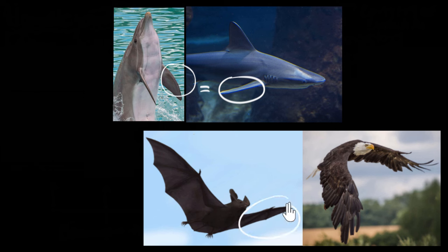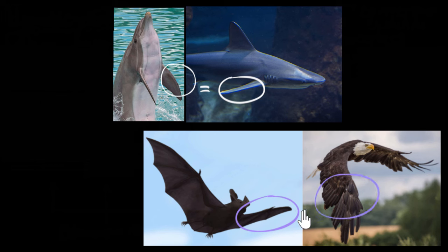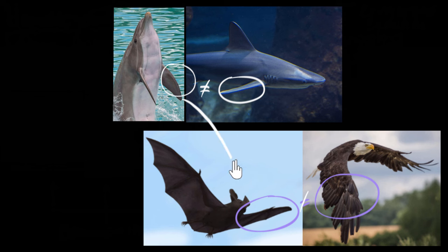And similarly, if you look at the wings of the bat and the wings of, say, an eagle, again, both are used for flying, they look kind of similar, we might say they are related to each other. But it turns out that in reality, they are not as closely related to each other. And in fact, surprisingly, these two structures are more closely related than these two or these two.